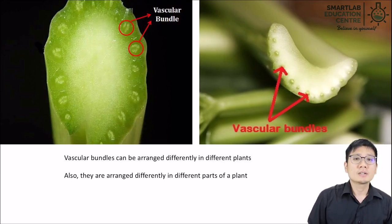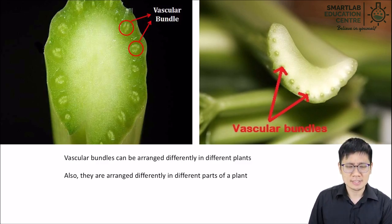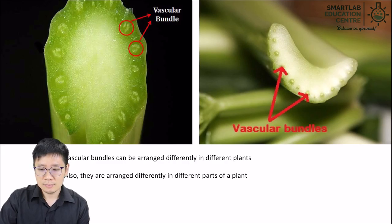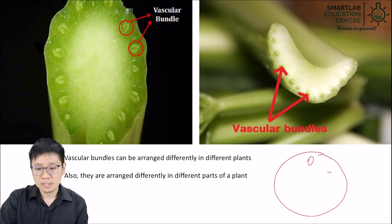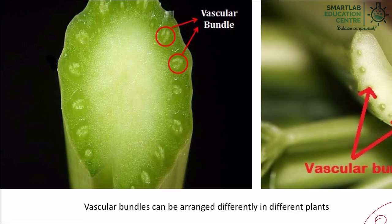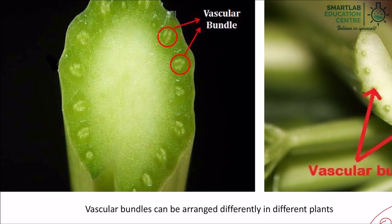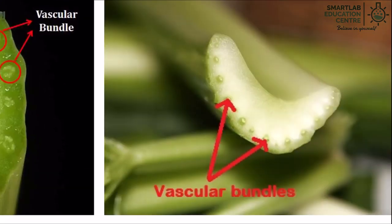Now let's talk about vascular bundle arrangements. For our syllabus, we're focusing on dicotyledonous plants. Dicotyledonous plants tend to have their vascular bundles within the stem arranged in a circular fashion — a ring. We can see this in the upper left picture showing a real plant. The vascular bundles can be arranged differently in different plants, and also differently in different parts of the same plant.